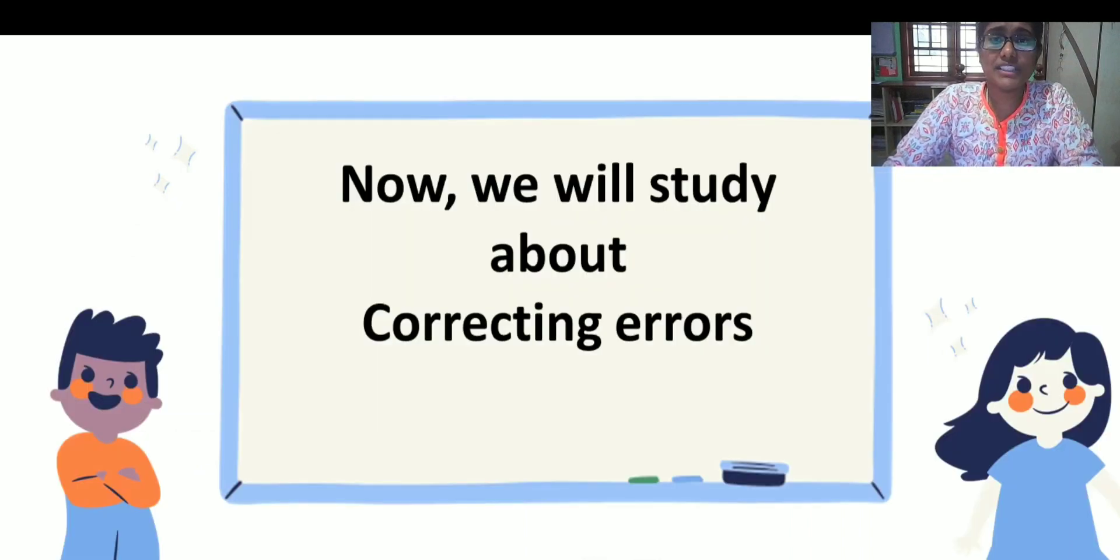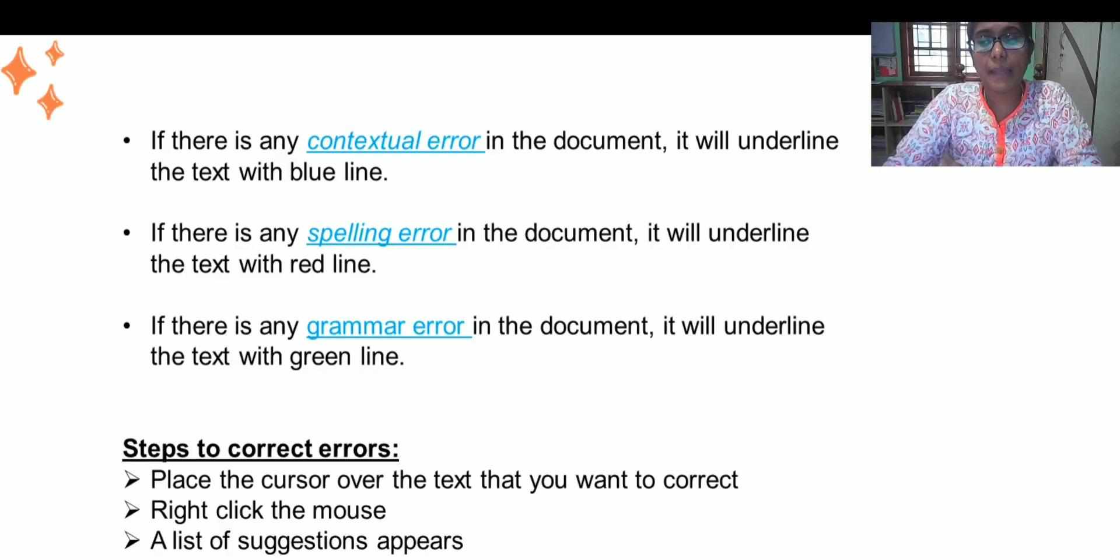Now let us study about correcting errors. When we type in MS Word, there is a set of errors that happen. There are mainly three types: contextual, spelling and grammar error.